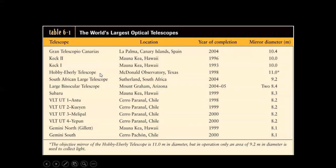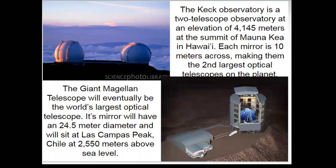Looking at the Hobby-Eberly Telescope in Texas — its overall diameter is large, but its effective operating area is less than the others, so we do not consider it the largest. The Keck Observatory is a two-telescope observatory at an elevation of 4,145 meters at the summit of Mauna Kea in Hawaii. Each mirror is 10 meters across, making them the second largest optical telescopes on the planet.